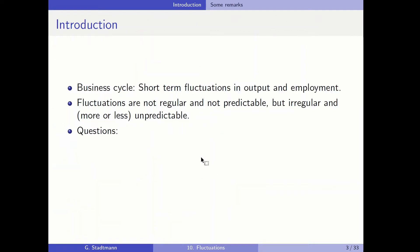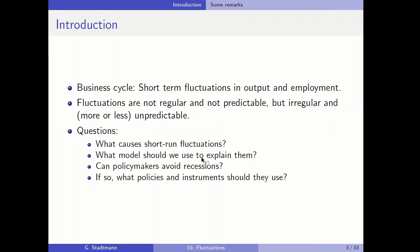Short-term fluctuations in output and employment are called the business cycle. These fluctuations are not regular and not predictable, but irregular and more or less unpredictable. The following questions will be answered in this chapter: what causes short-term fluctuations in the business cycle, and what kind of model should be used to explain these short-run fluctuations?